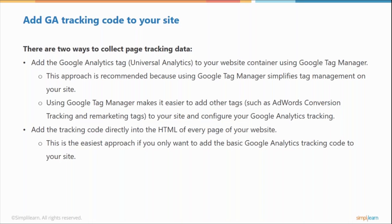You can also implement the tracking code directly into the HTML of every page of your website. If you have a purely HTML-driven website with no content management system, you're going to have to insert the tracking code directly yourself. However, if you're using WordPress or Shopify, there are typically places within the theme where you can put that information.